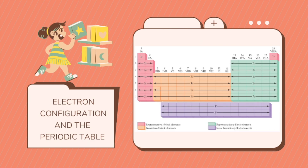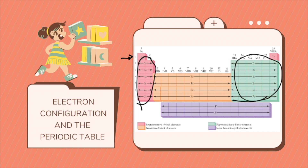So let's look at the periodic table. The periodic table can be used as a guide for electron configuration. The period number, as you would see here on this side, is the value of n, or the orbit. Groups 1A to 2A are the s orbital. Groups 3A to 8A are the p orbital. Groups 3B through 2B will be the d orbital. And the lanthanide and actinide series will be the f orbital.